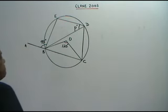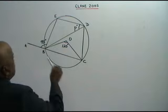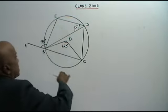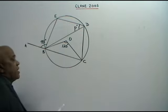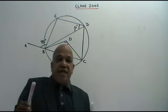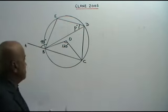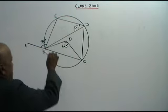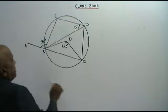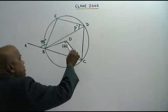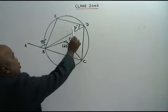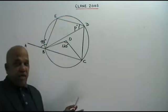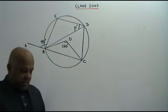You are given that BCDE is a cyclic quadrilateral. ABC is a straight line. You are given this angle is 95 degrees, and this angle is 120 degrees. You are asked to find the value of P. Let's apply the circle theorems.